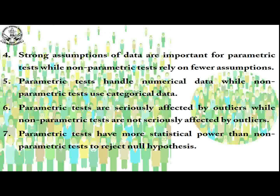Another difference: for parametric tests there must be strong assumptions about the data, while non-parametric tests rely on fewer assumptions only. Parametric tests can handle numerical data, while non-parametric tests use categorical data. You can go into details about the types of data from our other video on data and their types, which will make it easy to understand.